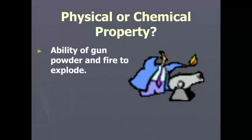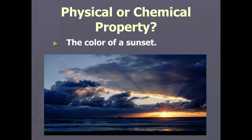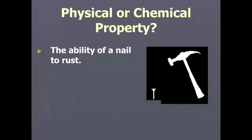Pop quiz! The ability of gunpowder and fire to explode — is that physical or chemical? If you guessed chemical, you are right, because that is flammability or combustibility. The color of the sunset — physical or chemical? If you guessed physical, you got it. The ability of a nail to rust — if you guessed chemical, you got that one, because it's reacting with air.